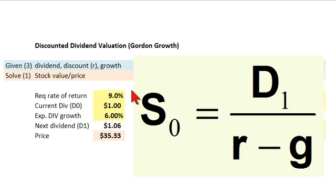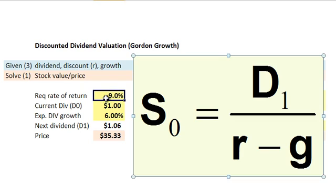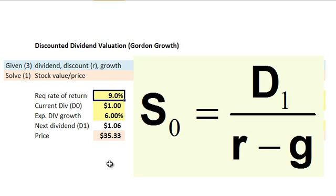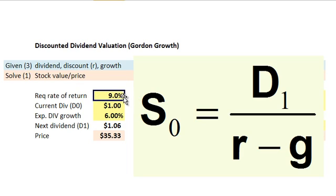Let's apply it here with some assumptions. We start with the required rate of return. If you look at the spreadsheet, you'll see that I'm making use of the Capital Asset Pricing Model, so the required rate of return is a function of a risk-free rate, a beta, and a market risk premium. I'm going to assume that the required rate of return is 9%. My input assumptions, as usual, are in yellow. That 9% corresponds to R, which we can fairly call the discount rate.